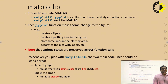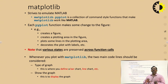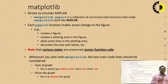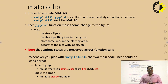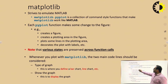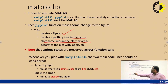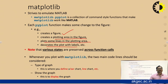Matplotlib is similar to MATLAB in terms of the kinds of graphs it provides. You can create a figure, plot in a plotting area, draw lines, and decorate the plot with labels, headings, and more. Types of graphs you can create include bar charts, line charts, and scatter plots. The library also allows you to generate histograms, power spectra, error charts, and pie charts.